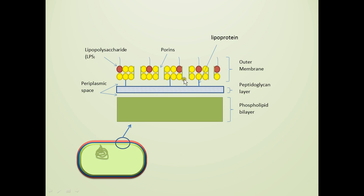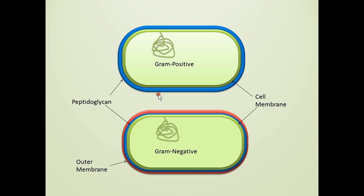That gives us our outer membrane, our cell membrane, and a thin layer of peptidoglycan in between — that is the typical gram-negative bacterium. Now let's compare gram-positive to gram-negative. The gram-positive bacterium has two parts to its cell envelope: a cell membrane and a thick layer of peptidoglycan made up of multiple sheets.